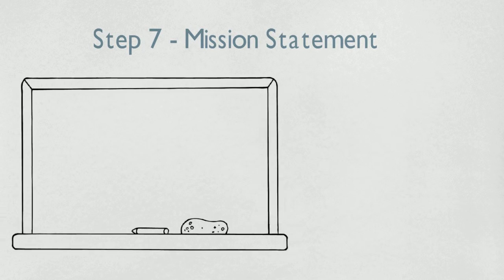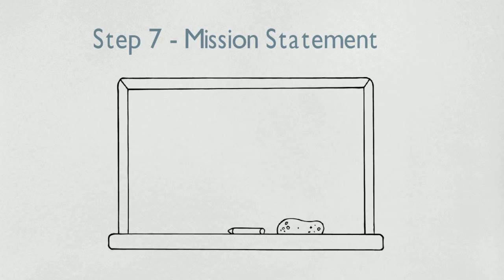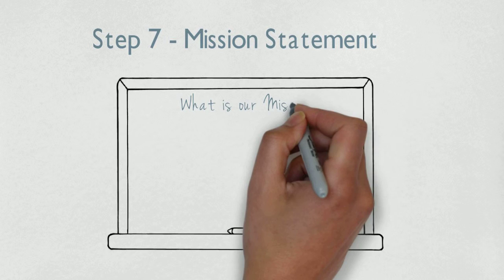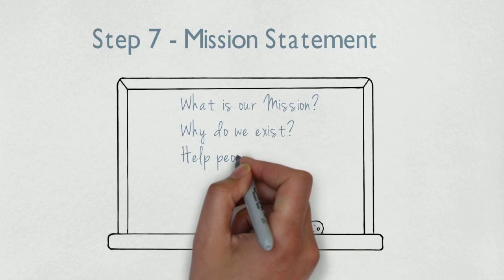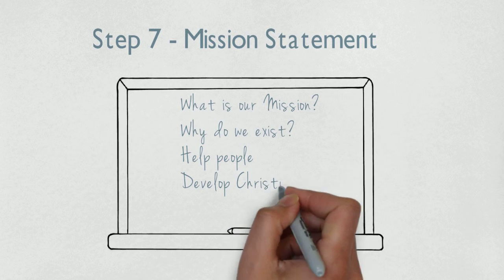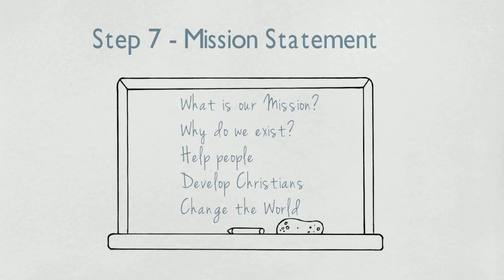Step number seven: create the mission statement. Once the vision statement is complete, do a similar exercise to come up with a mission statement. Remember, a mission statement is a short description of why the organization exists. Spend some time writing down descriptive words for why the church exists. After all the ideas are on the flip chart, begin to wordsmith the ideas until the group creates a descriptive short phrase. Make sure the entire group agrees that the phrase truly reflects the church's mission and describes why it exists.